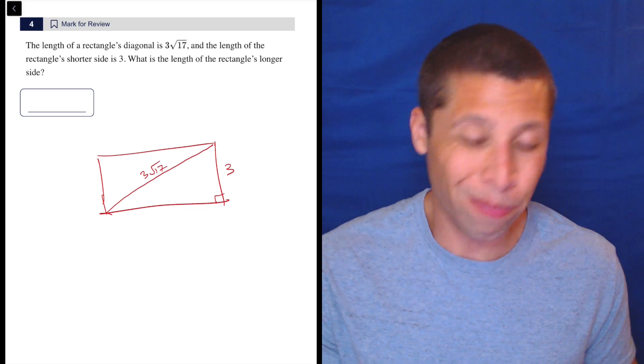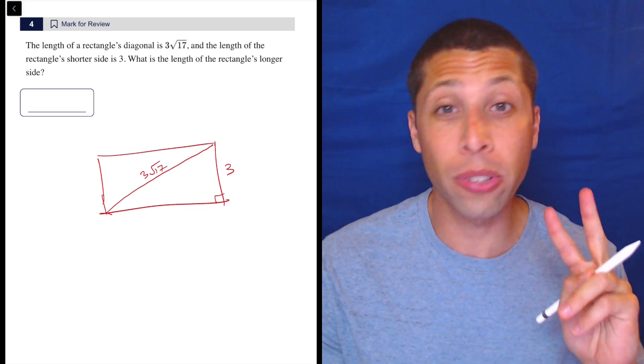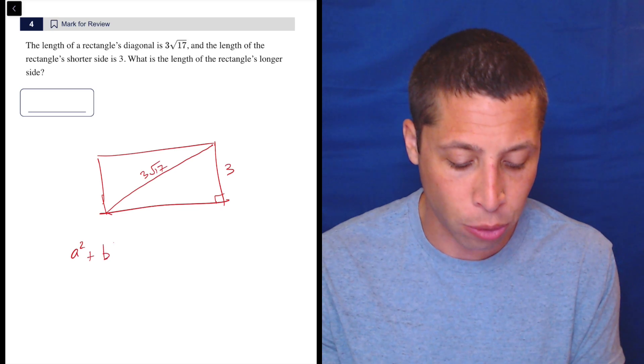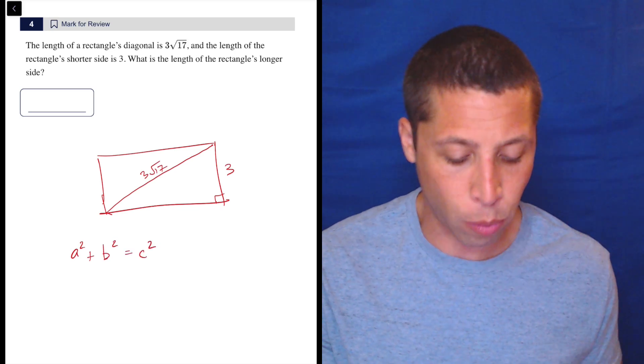Anytime you have two sides of a right triangle, we can get the third using the Pythagorean theorem. What I learned as a² + b² = c². Now on the reference chart, they stupidly, or weirdly, put the c first for some reason. It doesn't really matter.